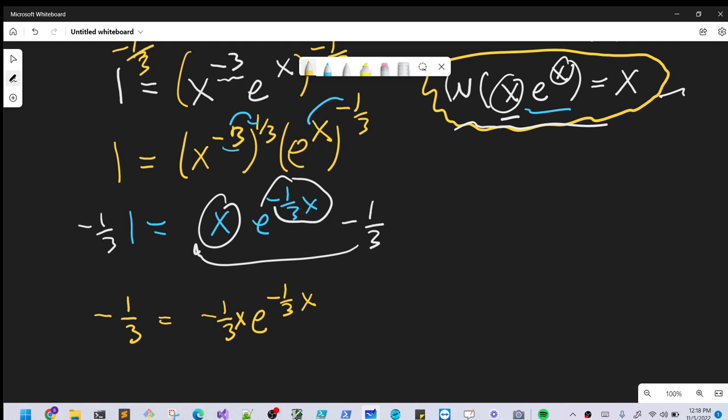Now that we have it in the form we would like, we can apply our Lambert W function. We'll take Lambert W on the left side, Lambert W of -1/3, and Lambert W on the right. Using our formula, this whole thing is just going to be -1/3 x.